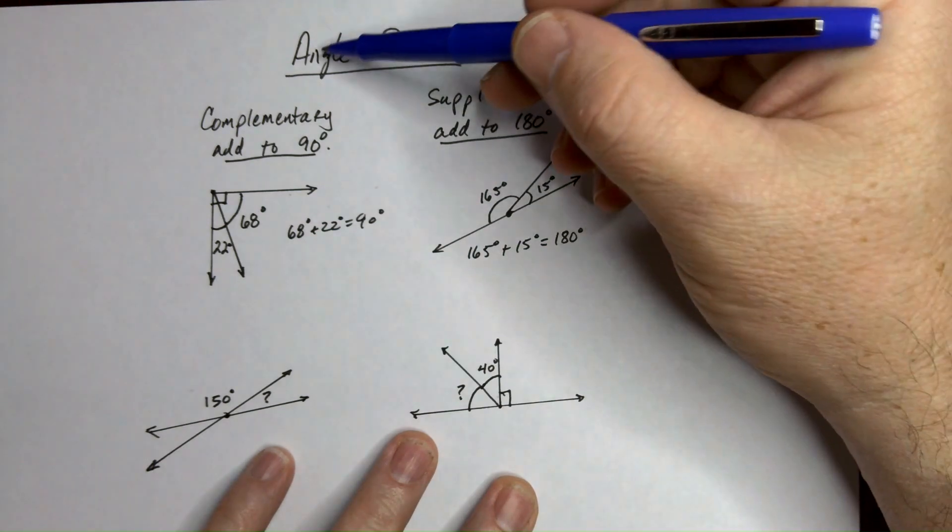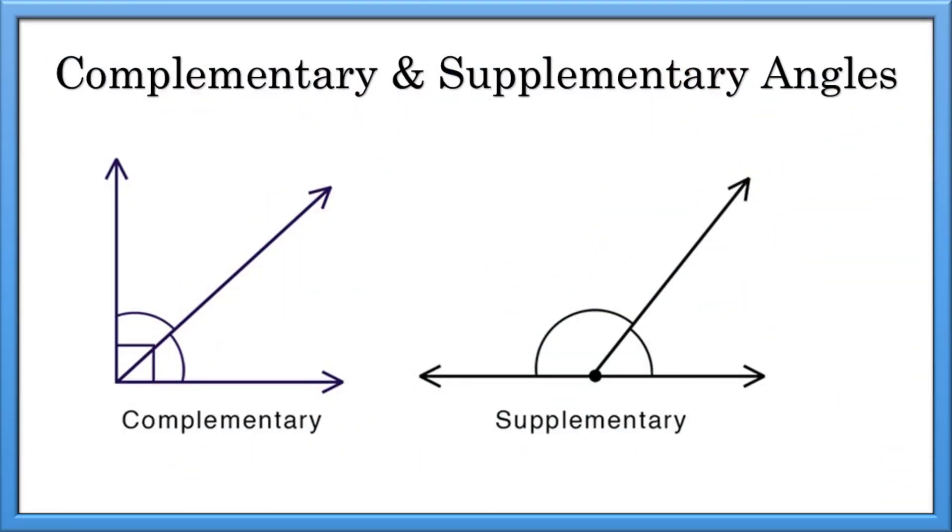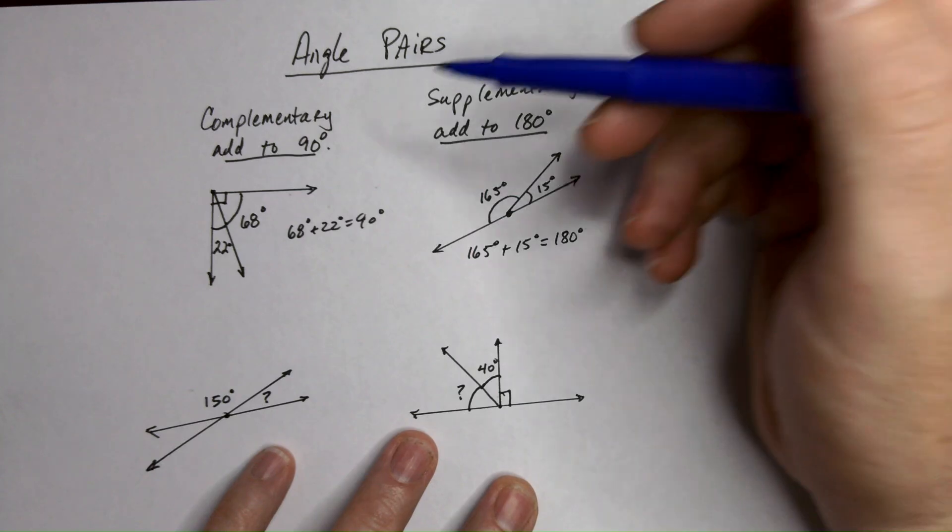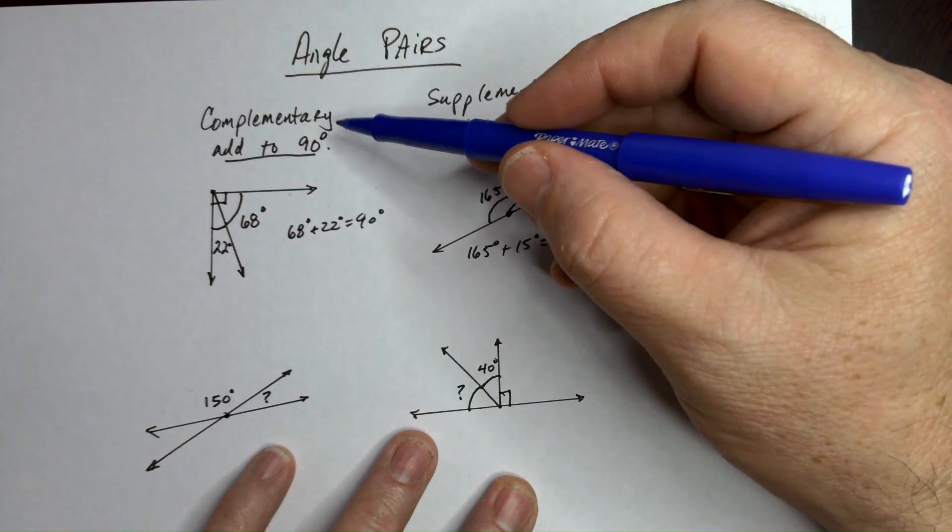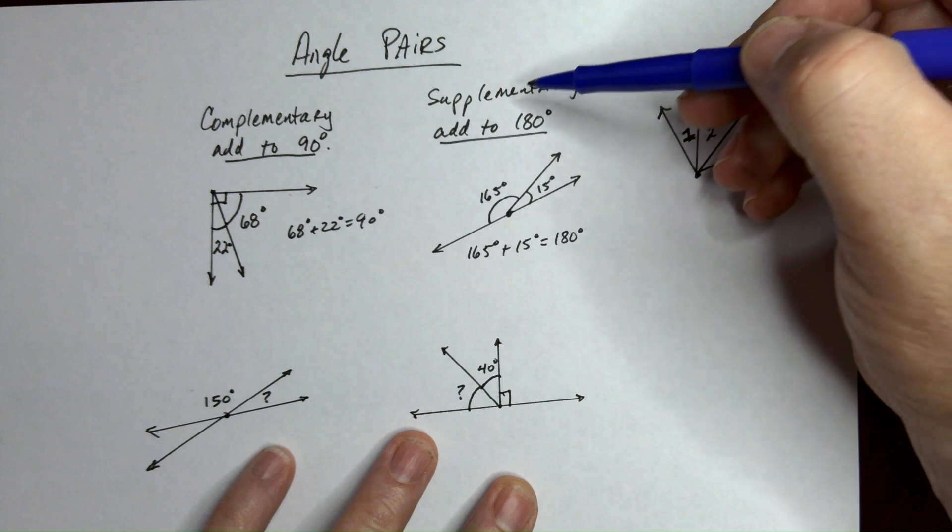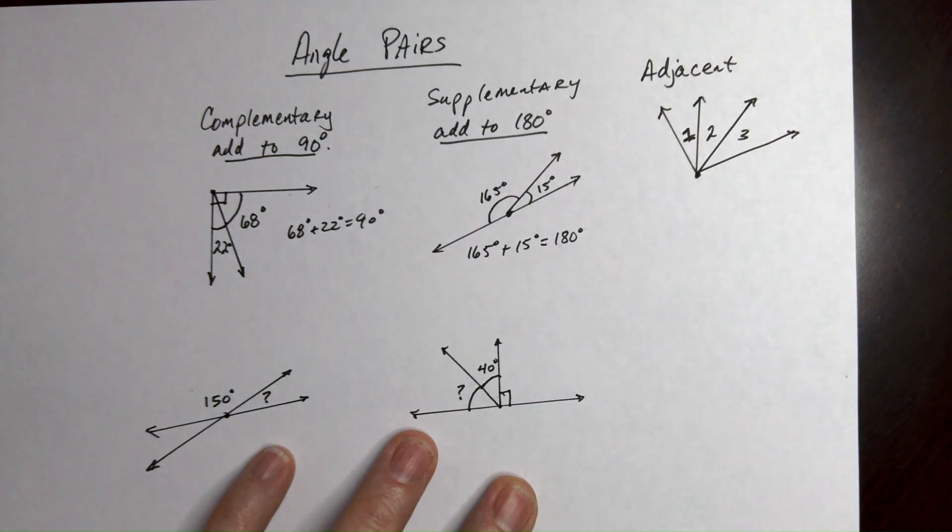All right, let's do a quick video on angle pairs. In particular, what we're talking about are complementary and supplementary angles. So complementary angles are two angles that add up to 90 and supplementary angles add up to 180.